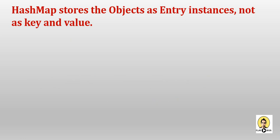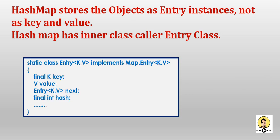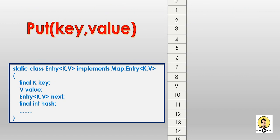HashMap stores the object as an entry instance — it has a class called Entry and makes instances of that, not just a key and value. The HashMap has an inner class called Entry class with values: key, value, next, and hash. These four fields represent the key, value, pointer to the next node, and the hash of the key. Input is key and value, and internally the entry is calculated with key, value, next, and hash — it acts as a node.